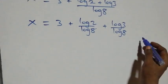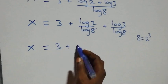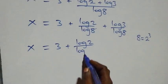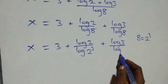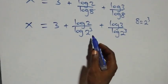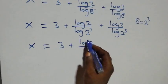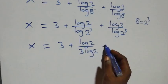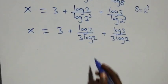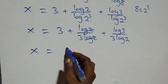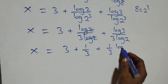We express eight as two times two times two, which is two cubed. So log eight equals log two raised to power three. Applying the power rule, three comes down in the denominator, giving log two over three log two plus log three over three log two. Log two cancels in the first fraction, leaving one over three. So x equals three plus one over three plus one over three times log three over log two.